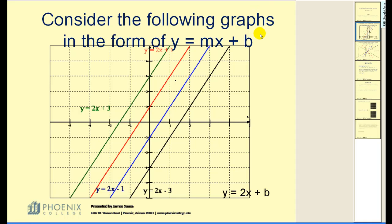Consider the following graphs in the form of y equals mx plus b. More specifically, all of these lines are in the form of y equals 2x plus b. Basically, I'm varying the value of b. This black line is y equals 2x minus 3, and I want you to notice it crosses the y-axis right at negative 3.